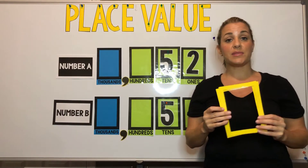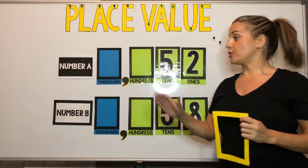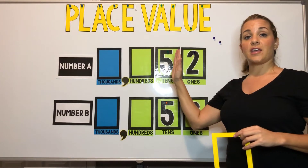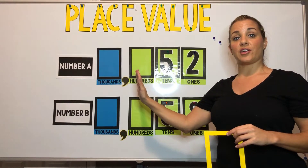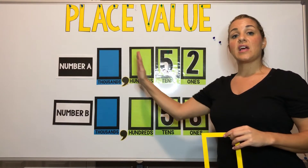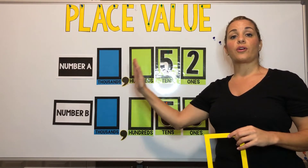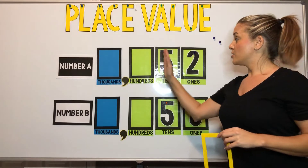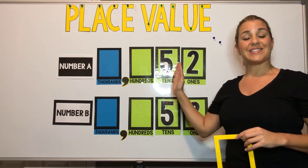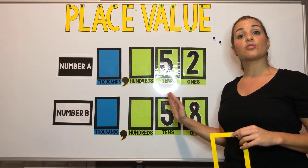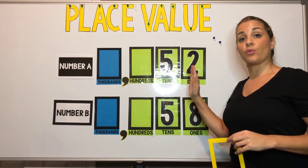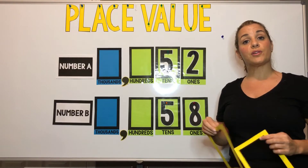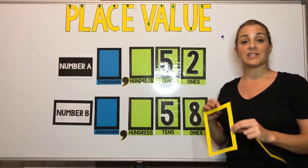I like to use these frames when you compare two numbers. Your students will put them on the place value chart and then start in the greatest place value, working their way to the least. They're looking for the first place value where the numbers are different. The first digit in these two numbers is a five in the tens place — since these are both the same, we move to the ones place. These two are different, so we put a frame around each of the ones place digits.